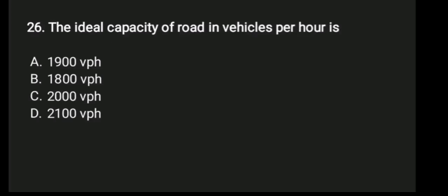26. The ideal capacity of road in the vehicle per hour is A. 1900 BPH, B. 1800 BPH, C. 2000 BPH, D. 2100 BPH.